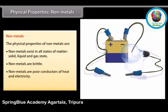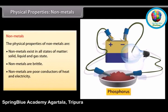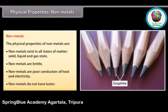Non-metals are poor conductors of heat and electricity. However, graphite — a form of carbon — is an exception as it is a good conductor of electricity and is used in making electrodes. Non-metals have no metallic luster and do not reflect light.